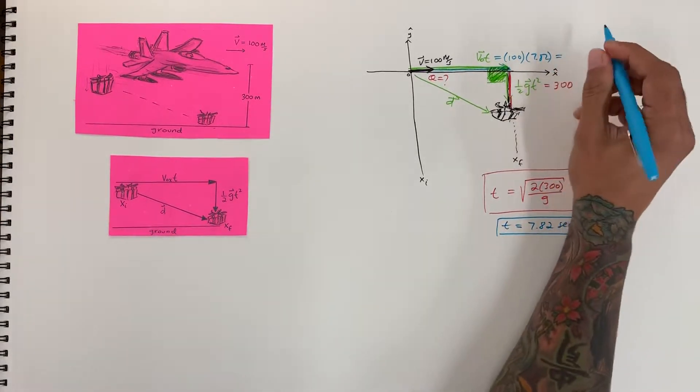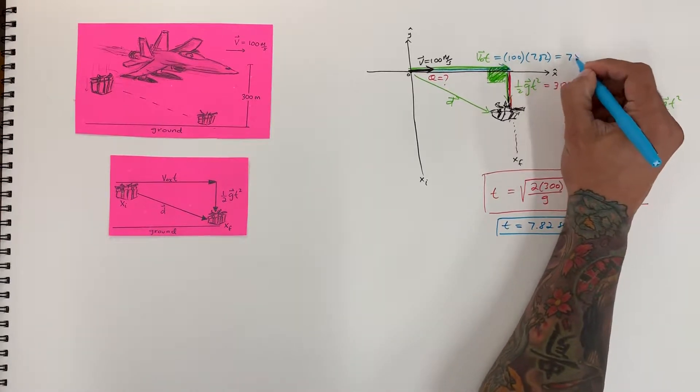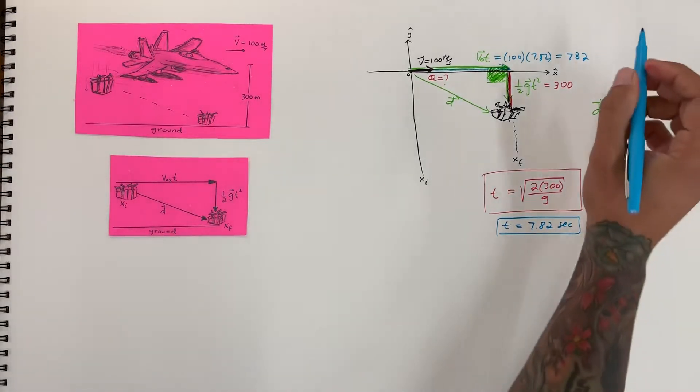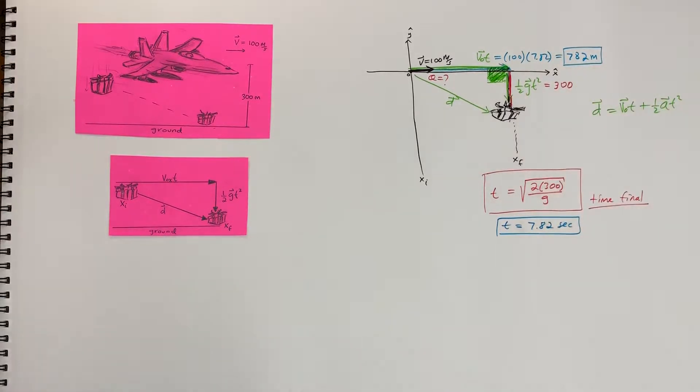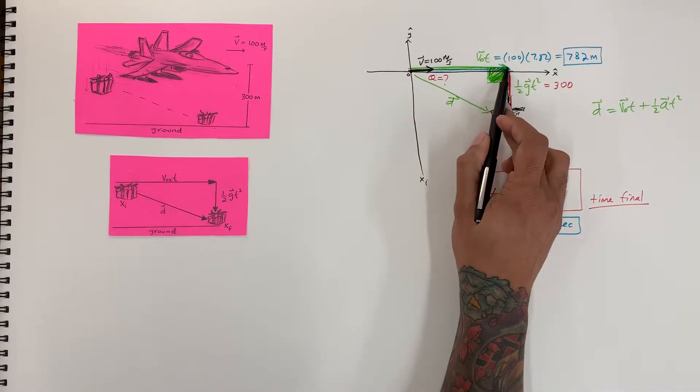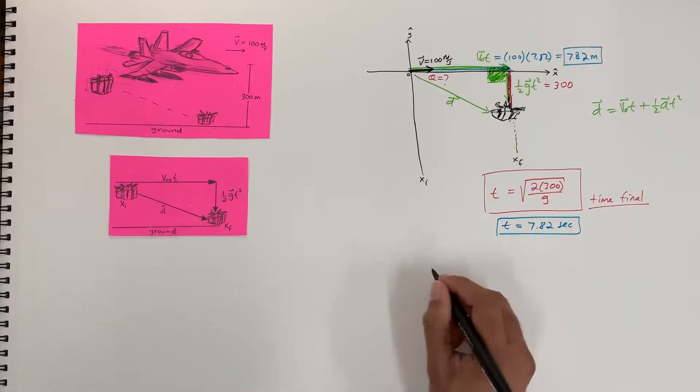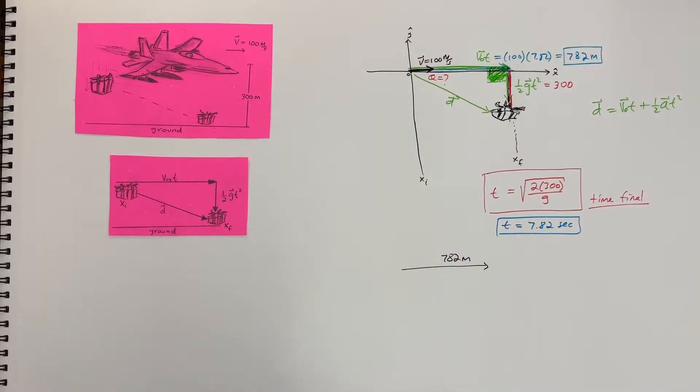Okay, so that's equal to let me see, 7.82. Alright? This is meters. Okay, so let's see what we got. Alright? We have the length of this and the value at 7.82. So we have this vector that now has a value of 7.82 meters.